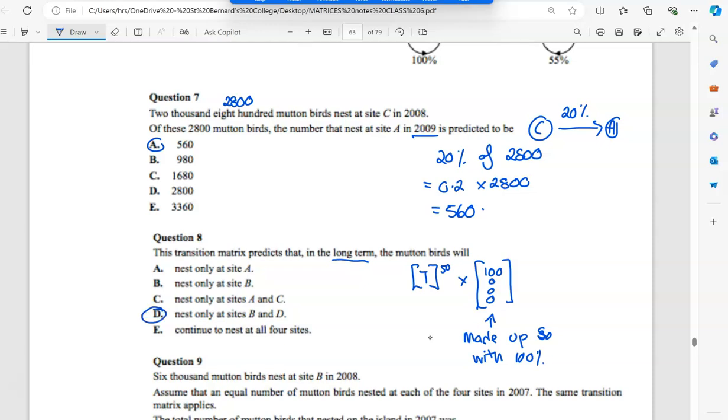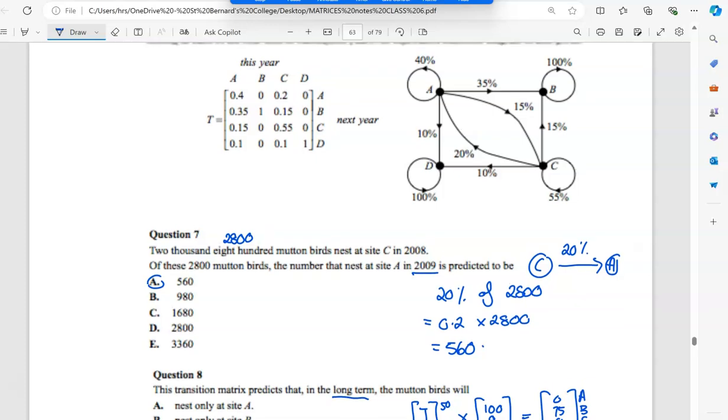So what happens in the long term, they all nest at site B. So if you did that, you could just say 0, 75, 0, 25. So that was A, B, C and D. But as someone said, or they said, because you can see once you get to B, you never leave. And once you get to D, you never leave. That's what happens when you have a one in there.